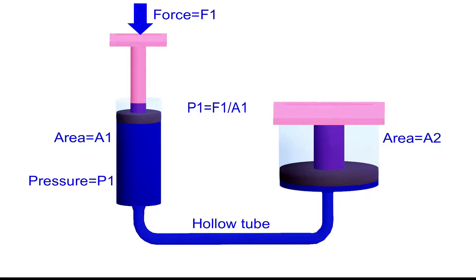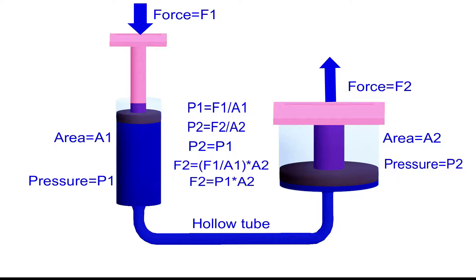This develops a pressure of F2 by A2 on the larger cylinder. Since the system is confined, Pascal's Law is valid. So we can say that pressure at smaller cylinder is equal to the pressure at larger cylinder. This clearly tells us that force at larger cylinder is pressure at smaller cylinder multiplied by area of larger cylinder.